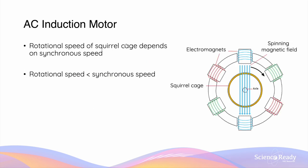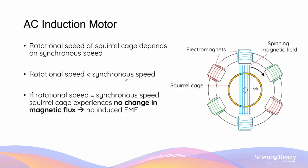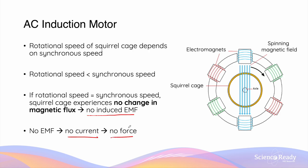The rotational speed of the squirrel cage depends on the synchronous speed — that is, the speed at which the magnetic field is rotating. However, it is important to understand that the rotational speed of the rotor must always be slower than the synchronous speed. If the rotational speed were equal to the synchronous speed, the rotor bars in the squirrel cage would not experience any changes in flux. With no change in magnetic flux, there would be no induced EMF, no current, and therefore no force acting on the squirrel cage. So the rotor speed must always be less than the synchronous speed.